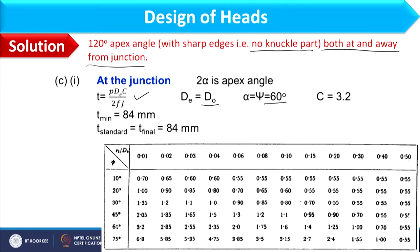From table 3.6, with ψ = 60° and no knuckle part (Ri/DE = 0.01), the value of C is 3.2. Computing the conical section thickness at the junction gives a value greater than 30 mm, so no corrosion allowance is added. The final thickness at the junction is taken as 84 mm.